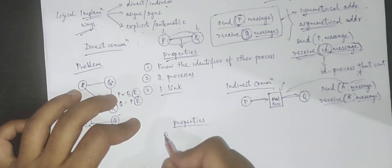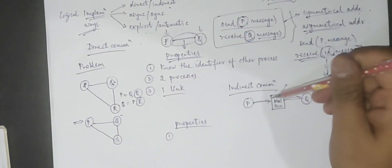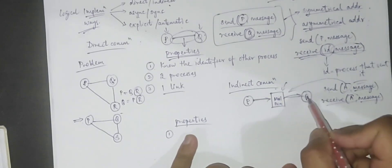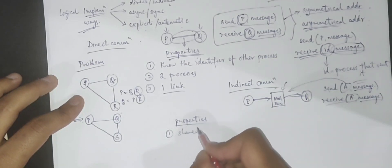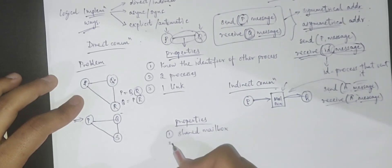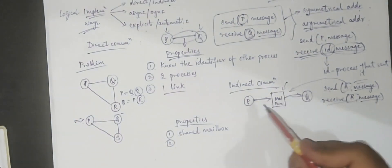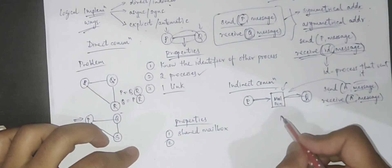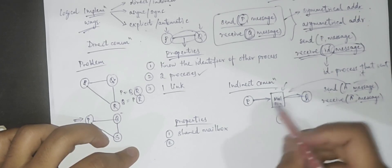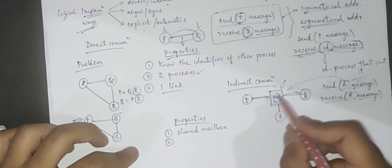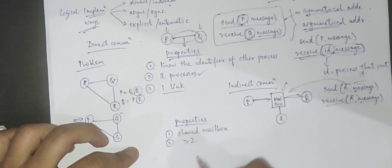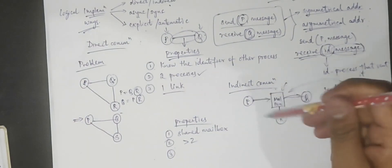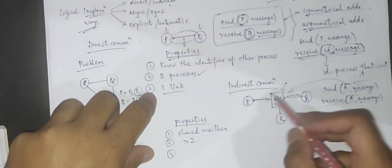The properties of an indirect communication link are: two processes have a communication link only if they share a mailbox. One link can be associated with multiple processes, not just two — if another process also has access to the same mailbox, it is part of the same link. Additionally, between any two processes multiple links are possible, unlike in direct communication.